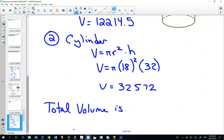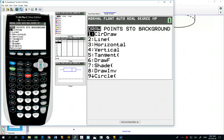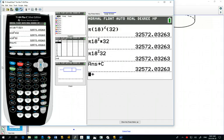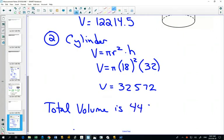So the total volume will be the hemisphere plus the cylinder together. You could show your work if you wanted to by rewriting this number plus this number. I don't want to write all those numbers right now. I've stored one answer as H, one answer as C. So now I can go hemisphere plus cylinder. H plus C, 44786.5. Did I write it down correctly? 44787.